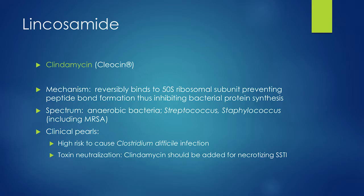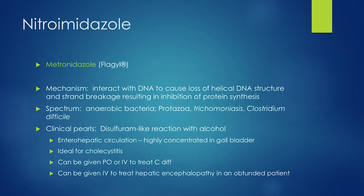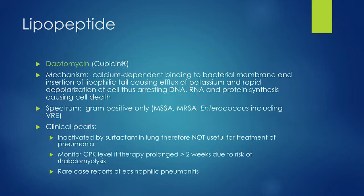Metronidazole we covered with enterohepatic circulation. Daptomycin — a reminder that it cannot be used to treat any type of pneumonia. If a patient is on daptomycin for osteomyelitis and comes in with pneumonia, don't assume they're covered for MRSA pneumonia. You still need to give vancomycin to cover MRSA in that pneumonia.